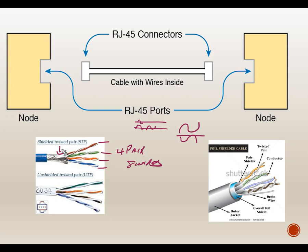Twisting doesn't totally cancel noise but does reduce it significantly. Shielding helps with electromagnetic interference (EMI) as does the twisting. In a fully shielded twisted pair (F/STP), each pair has its own shield and there is also an overall foil shield around the outer jacket. This additional shielding is the reason we can push speeds higher and higher.